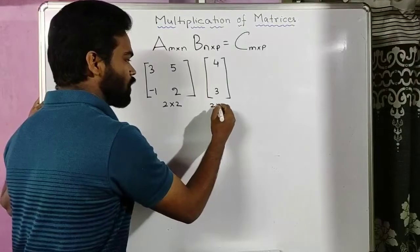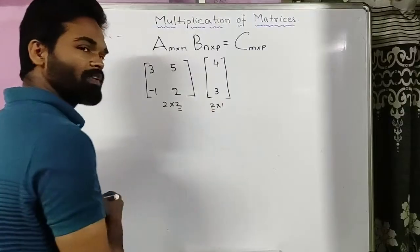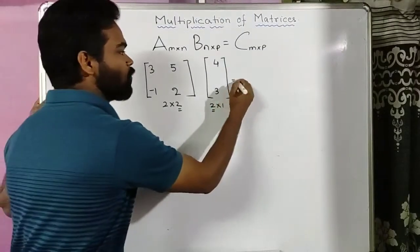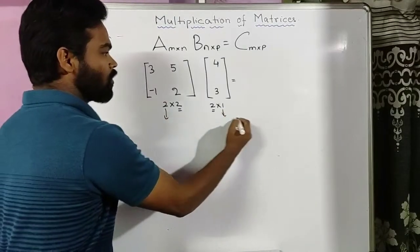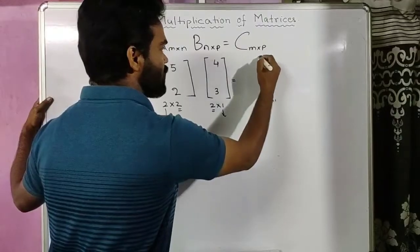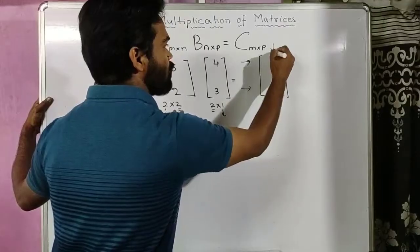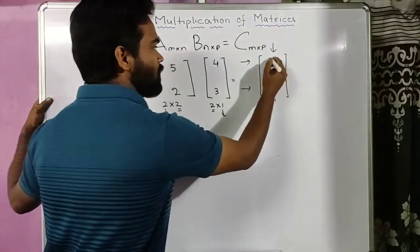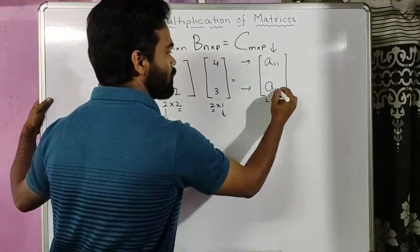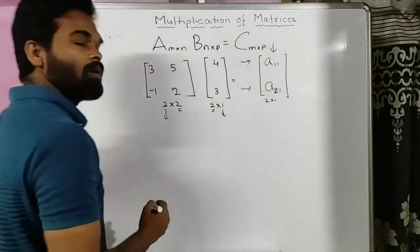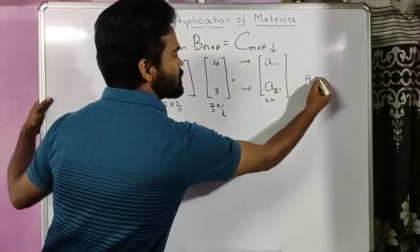The order of B is 2×1. We see that the number of columns of the first matrix equals the number of rows of the second matrix, so they are compatible. The order of the resultant matrix will be 2×1, meaning it will have two rows and one column. We know the elements are a₁₁ (first row, first column) and a₂₁ (second row, first column).